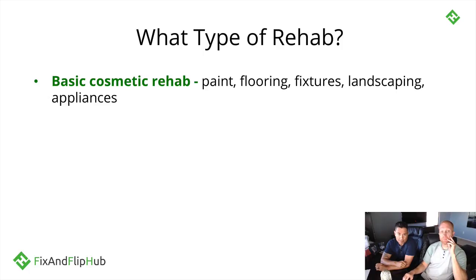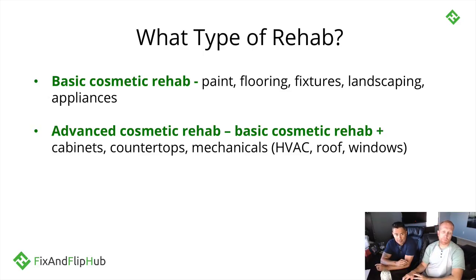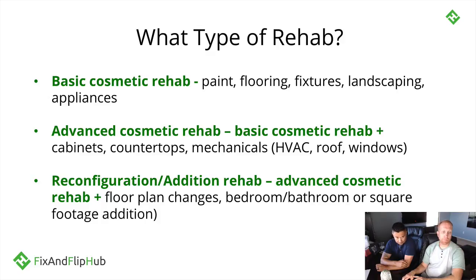The first type is a basic cosmetic rehab — you're doing basic things, not reconfiguring anything. You're just painting, changing the flooring, fixtures, landscaping, and appliances. The next level is an advanced cosmetic rehab — everything in the basic, plus replacing cabinets, countertops, and mechanicals like HVAC, roof, and windows. You're getting a little more into the project.